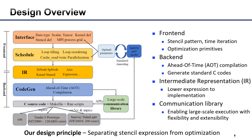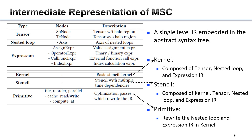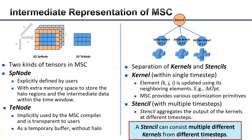MSC adopts a single-level IR embedded in the abstract syntax tree. The IR mainly contains the tensor IR, nested loop IR, and expression IR. The kernel and stencil are composed of the above IR, and optimization primitives can rewrite the nested loop and expression IRs in the kernel. There are two kinds of tensors in the IR: SP node and TE node. The SP node can be explicitly defined by users, and MSC automatically allocates extra memory space to store halo regions and intermediate data within the time window. The TE node is internally used by the MSC compiler and is transparent to users.